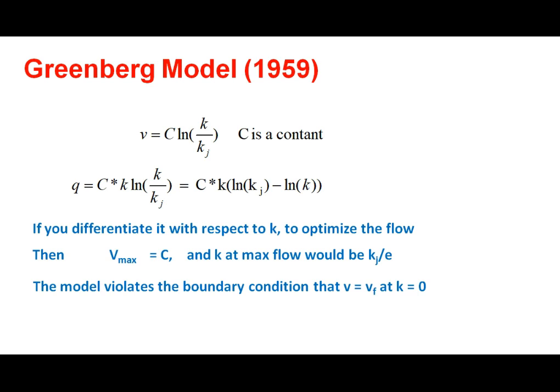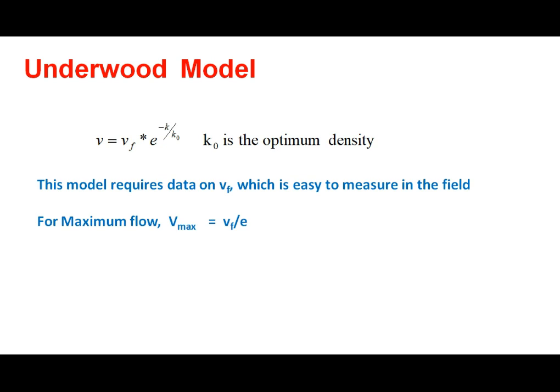In Greenberg's model, zero density can only be attained when speed is extremely large, which is physically unrealistic. To overcome this limitation, Underwood assumed an exponential correlation between speed and density: V = V_F × exp(−K / K_opt), where K_opt is the optimum density — the density at maximum flow.